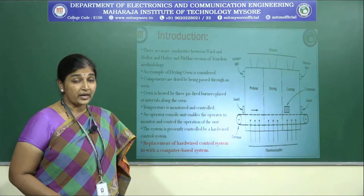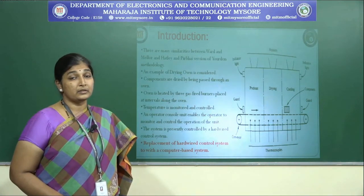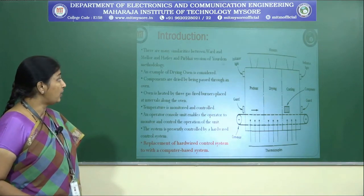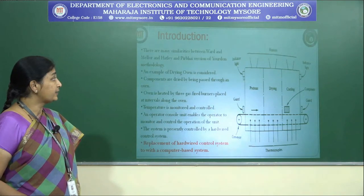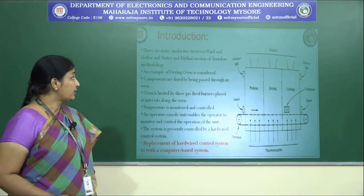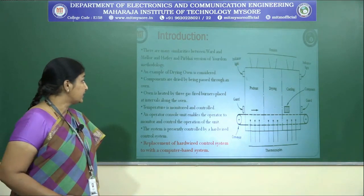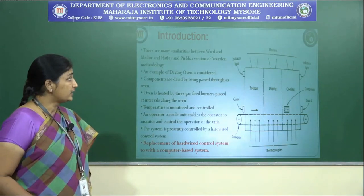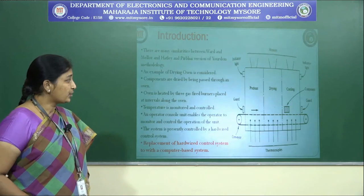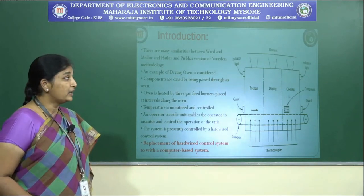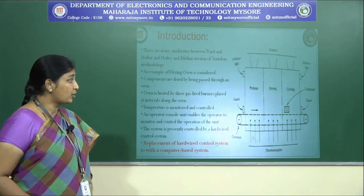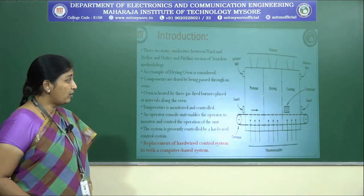The example is a drying oven which is mainly used for drying components. There are many similarities between Ward and Miller and Hatley and Firbain versions of the Jordan methodology. In this example of a drying oven, components are passed through the oven to be dried. In the diagram, you can see the oven with three heaters — one is the preheater, one is for drying, and the other is for cooling the component. There is also a conveyor belt on which the components move, highlighted here as a single component.